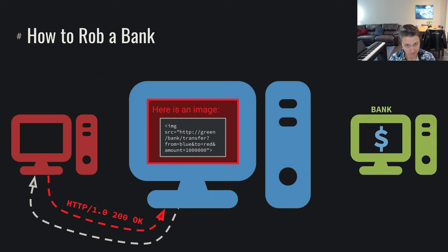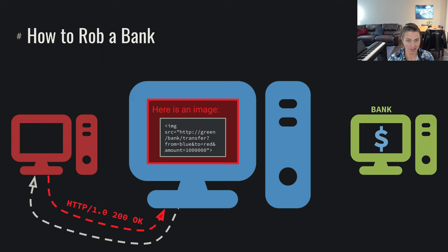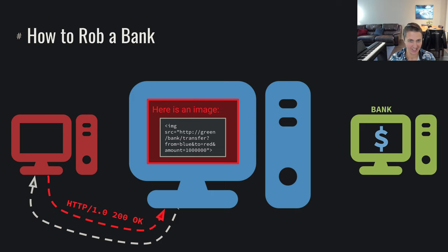This image has a source attribute within the HTML of this page, and it's going to be accessible from some other website. That other website is, in this case, the bank. It's saying, check out this image — it's this cool image where I want you to transfer a million dollars to me. Obviously this is an issue, and web security needs to take into consideration this sort of concept.